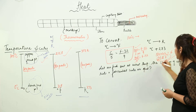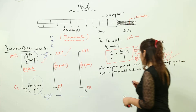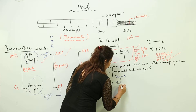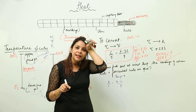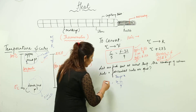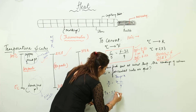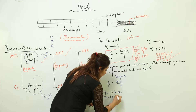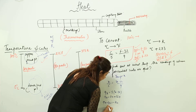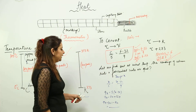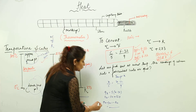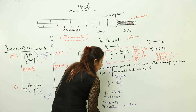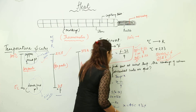Now, let's find at what temperature the readings on degree Celsius and Fahrenheit are the same. We consider the temperature as x and substitute into the formula: x/5 = (x − 32)/9. Solving: 9x = 5(x − 32), so 9x = 5x − 160, giving 4x = −160, and therefore x = −40. So at −40 degrees, the Celsius and Fahrenheit readings are the same.